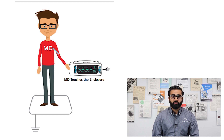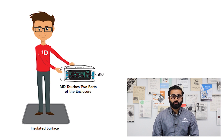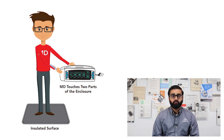The current is going to be generated at the enclosure point, travel through the measuring device to earth. Another way to look at a touch current point is between two enclosure points. In this case, the MD is placed between two enclosure points. Current is going to be generated at one enclosure point and returns back from another enclosure point.